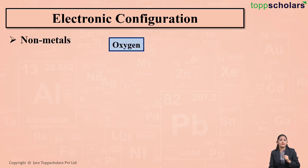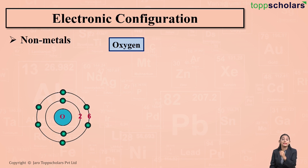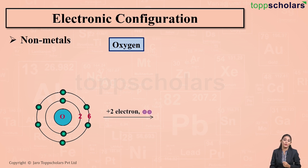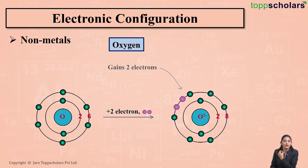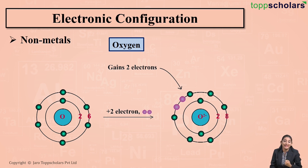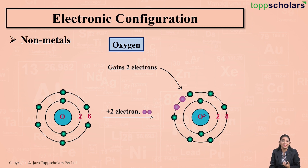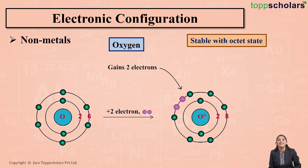What about oxygen? Oxygen has six electrons in its outermost shell. In order to become stable, oxygen gains two electrons. When oxygen gains two electrons, it forms a negatively charged O2− anion. On gaining these two electrons, oxygen becomes stable with the octet state.